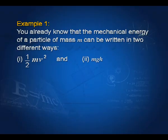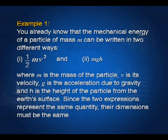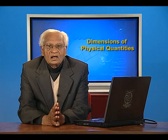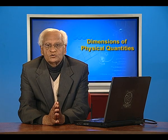The following examples illustrate the use of dimensional analysis. You already know that the mechanical energy of a particle of mass m can be written in two different ways: one is half m v squared, and the other is m g h, where m is the mass of the particle, v is its velocity, g is the acceleration due to gravity, and h is the height of the particle from the earth's surface. Since the two expressions represent the same quantity, namely energy, their dimensions must be the same.